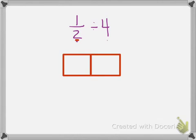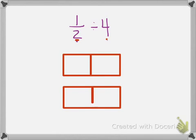I also know that by looking at the 4, it's telling me that I have to break or partition this tape diagram into 4 equal parts. So I'm going to draw another tape diagram underneath that's partitioned in half, but now I'm going to partition it into 4 equal parts.